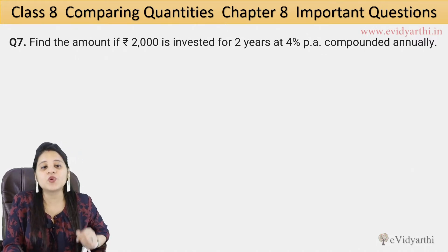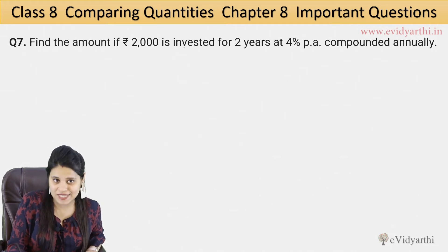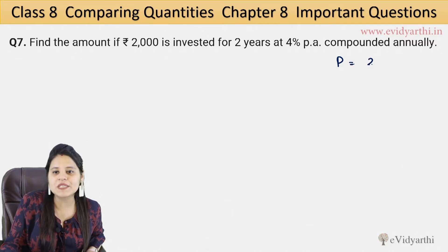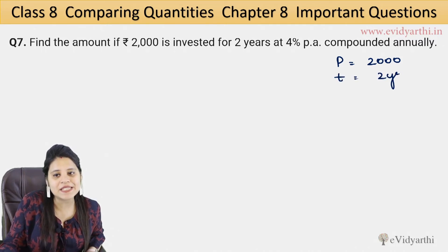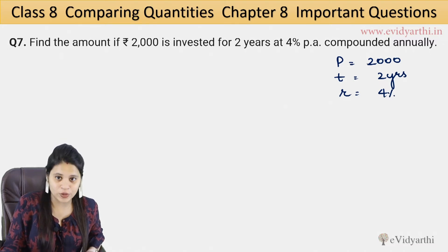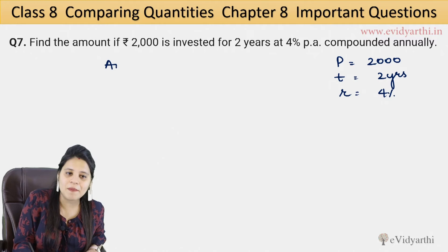If Rs. 2000 is invested, so the money we invest is our principal. So the principal is given for Rs. 2000, invested for 2 years. That means, given time, how many years we invested? 2 years at 4%. That means, rate of interest is 4%. All these things are compounded annually. We have to find the amount.